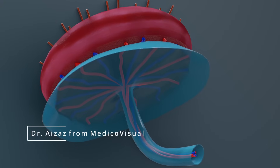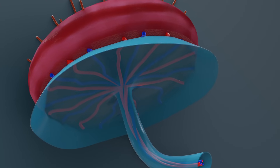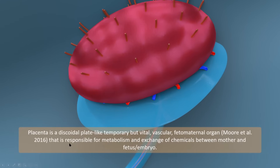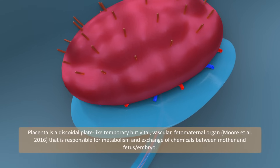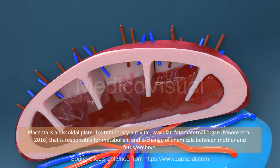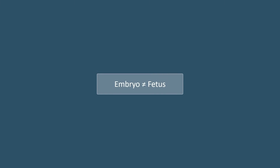Hello, I am Dr. Azaz from medicovisual.com and today we will talk about development of placenta. Placenta is a discoidal, plate-like, temporary but vital vasculate fetomaternal organ that is responsible for metabolism and exchange of chemicals between mother and fetus or the embryo. Please note that I will use the term embryo and fetus interchangeably during this lecture, but truly speaking the fetus is an embryo that has grown beyond the ninth week of development after fertilization.